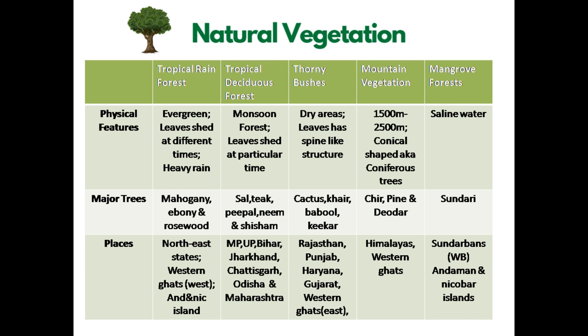Now let's look at the natural vegetation of India. Indian vegetation is classified into five types: tropical rainforest, tropical deciduous forest, thorny bushes, mountain vegetation and mangrove forest. Tropical rainforests receive heavy rainfall and are very dense. They are called evergreen forests because they shed leaves at different times of the year. Important tree species found here are mahogany, ebony and rosewood.